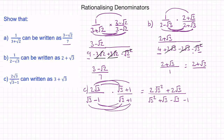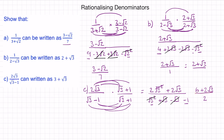And then minus 1 times positive 1 is minus 1. Now we know the root and the square will cancel. So we have 6 plus 2 root 3 for our numerator. For our denominator, the positive root 3 will cancel with the negative root 3. And the square and the square root will cancel again, so we have 3 minus 1, which is 2. So now we can simplify this fraction by factorizing the numerator. We'll take out the 2, which gives us 3 plus root 3, all over 2. We'll cancel out the 2s, leaving us with 3 plus root 3.